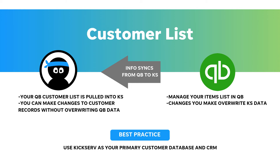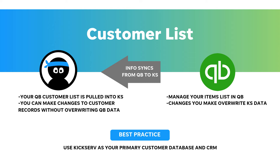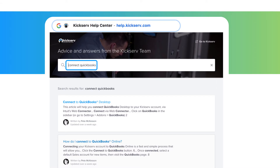The sync will also pull in your customer list and save them under your contacts tab. Use KickServe as your primary customer database and CRM. At any time, reference the QuickBooks tab to review, approve, and see your sync history. To start your integration, go to help.kickserve.com and search Connect QuickBooks.